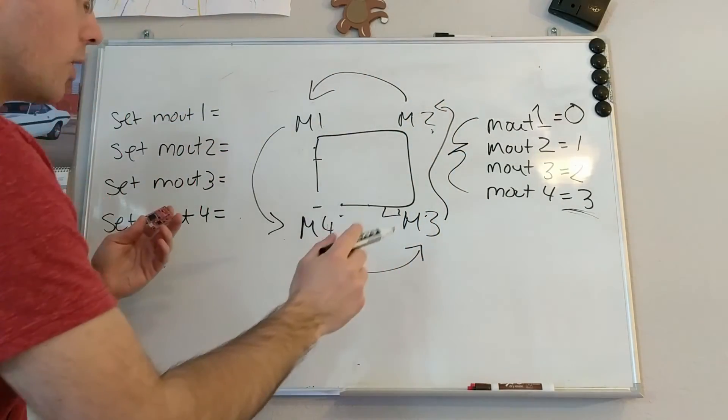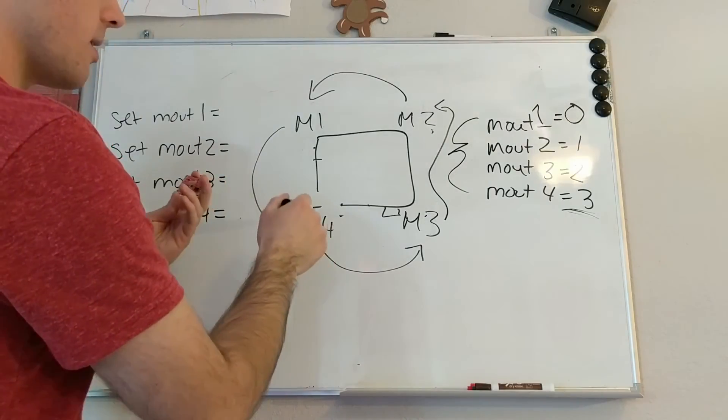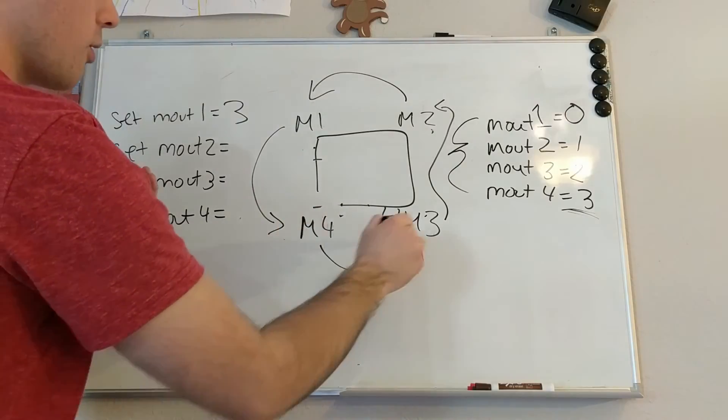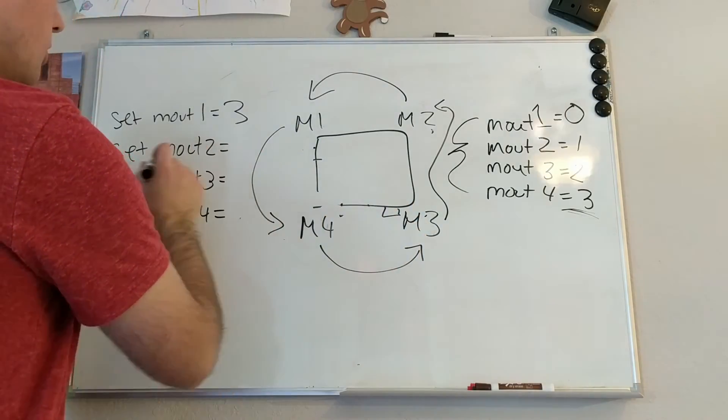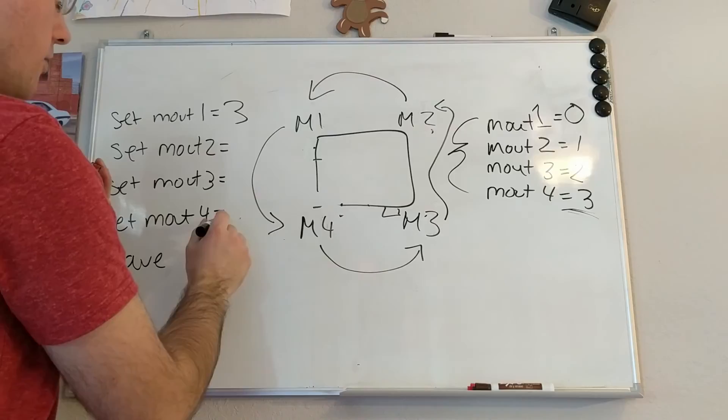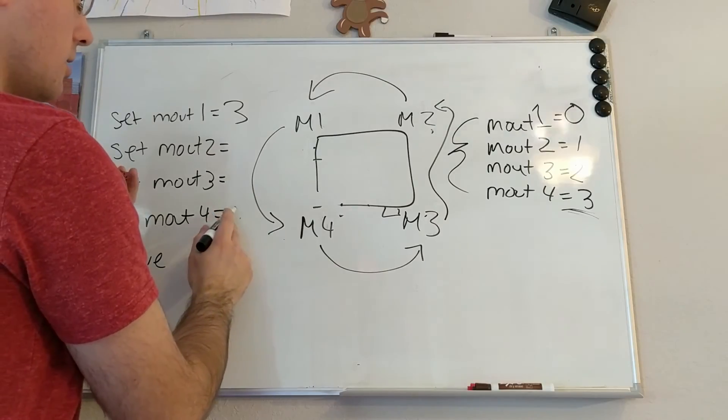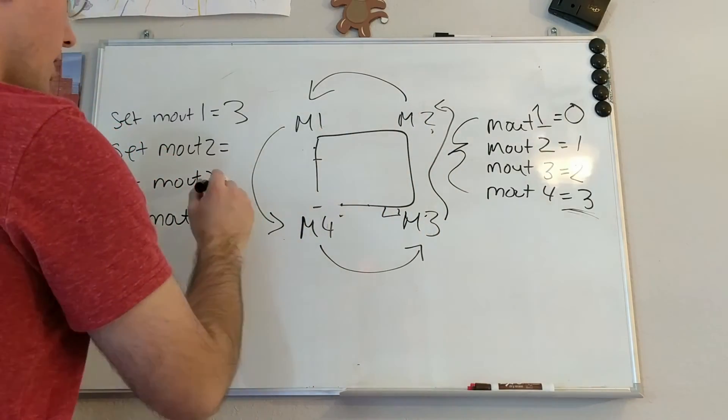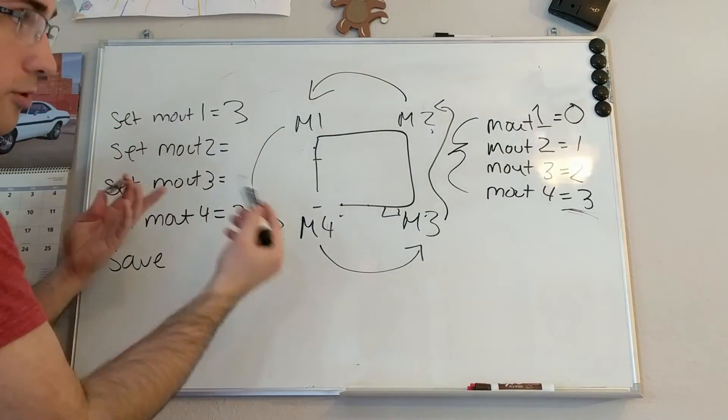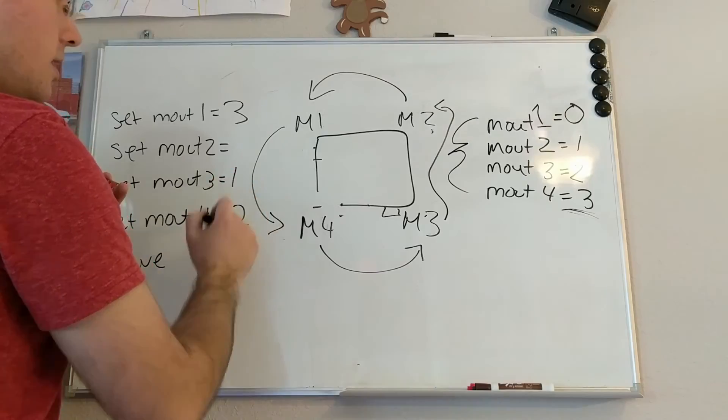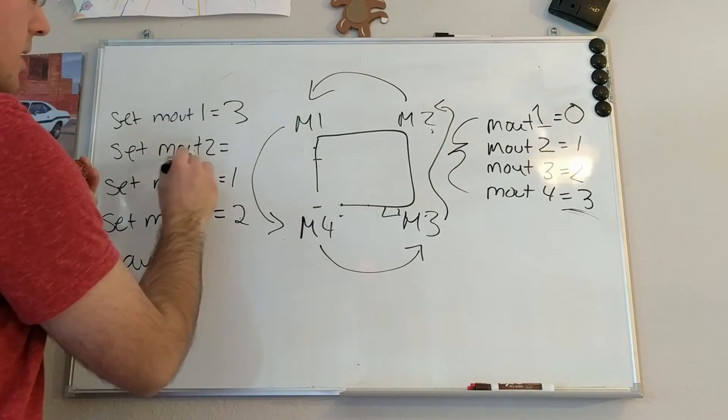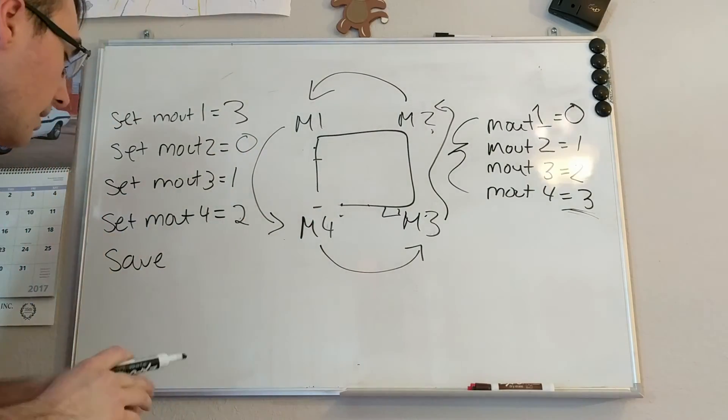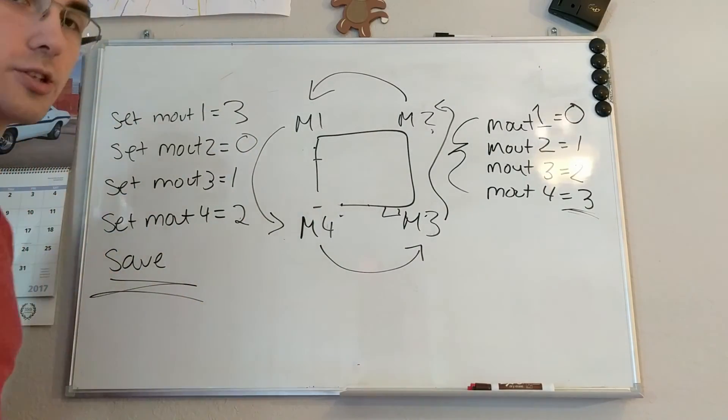So what you would do for that one is motor 1 would become motor 4, so it would be set mout 1 equals 3. Motor 4 would become motor 3, so it'd be set mout 4 equals 2. Motor 3 would become motor 2, so that would be set mout 3 equals 1. And then motor 2 would be 0 because it would be taking the place of motor 1. And then always make sure you do save.